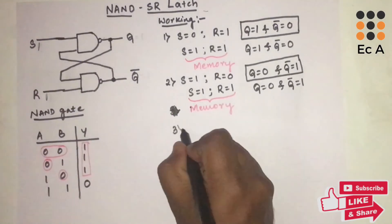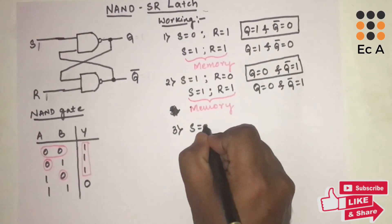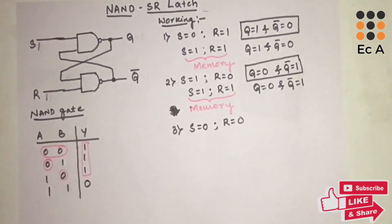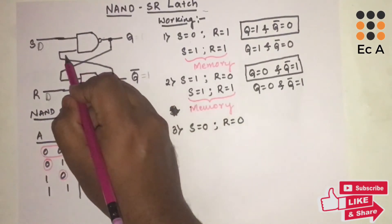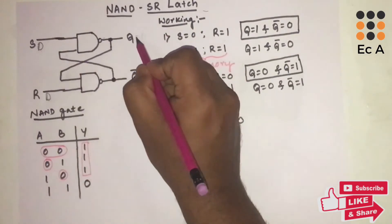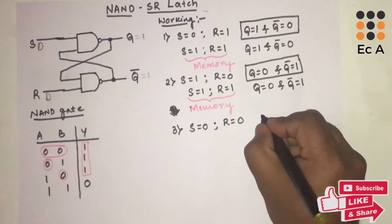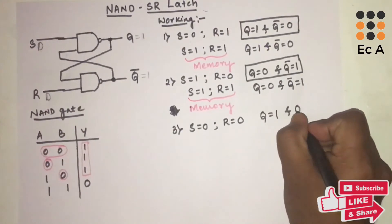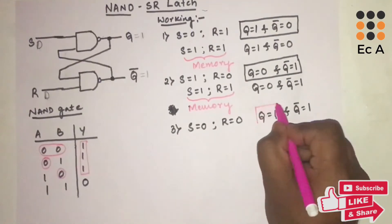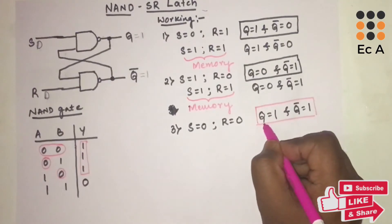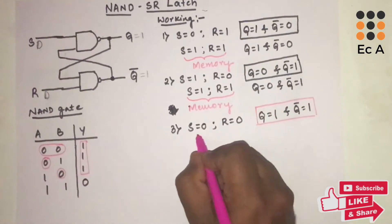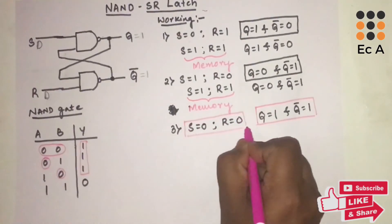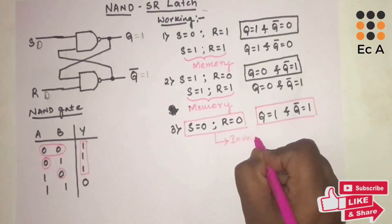Now let us take the third condition where S=0 and R=0. Since R=0, Q̄ will be equal to 1. This 1 feeds back, and with S=0, Q also becomes 1. So we get Q=1 and Q̄=1. This condition is not valid because Q̄ must be the complement of Q — if Q=1, Q̄ should be 0. Therefore, we call the state S=0 and R=0 the invalid state.